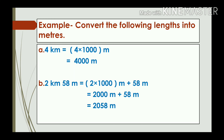Example: Convert the following lengths into metres. (A) 4 kilometres: multiply 4 by 1000 to get 4000 metres. (B) 2 kilometres 58 metres: multiply 2 by 1000 to get 2000 metres, then add 58 metres to get 2058 metres. So 2 kilometres and 58 metres is converted into 2058 metres.